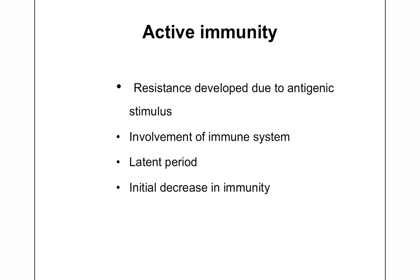Initially when the antigen enters, immunity may decrease. This is because if there are any preformed antibodies in the circulation, the antigen will bind with them, thus temporarily decreasing immunity. But later, immunity increases. Once the immune response is developed, it is long lasting. The first antigenic stimulus is referred to as the primary response, in which memory cells are generated. These memory cells get activated upon later stimuli, making active immunity a long-lasting immunity.